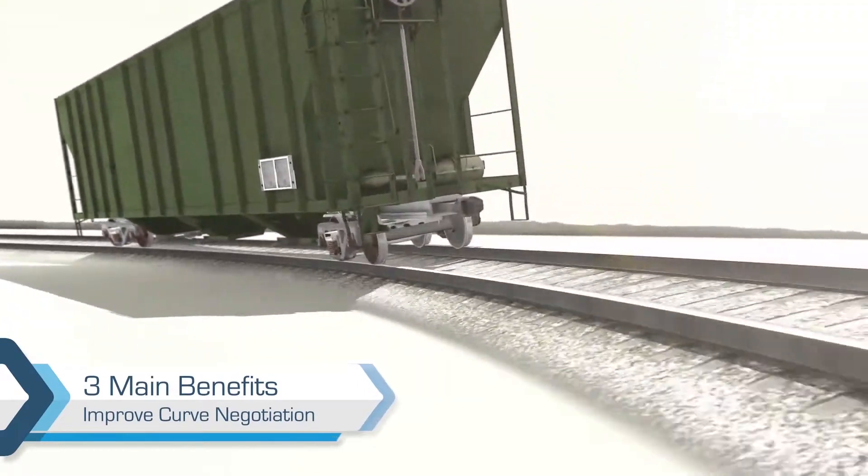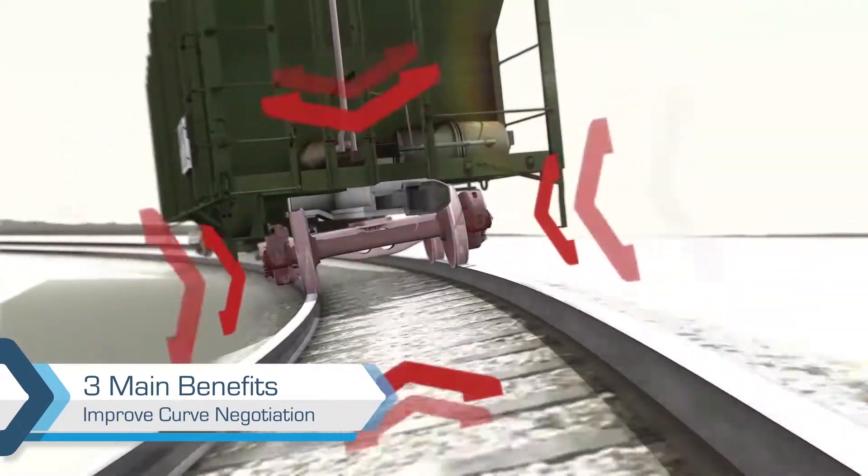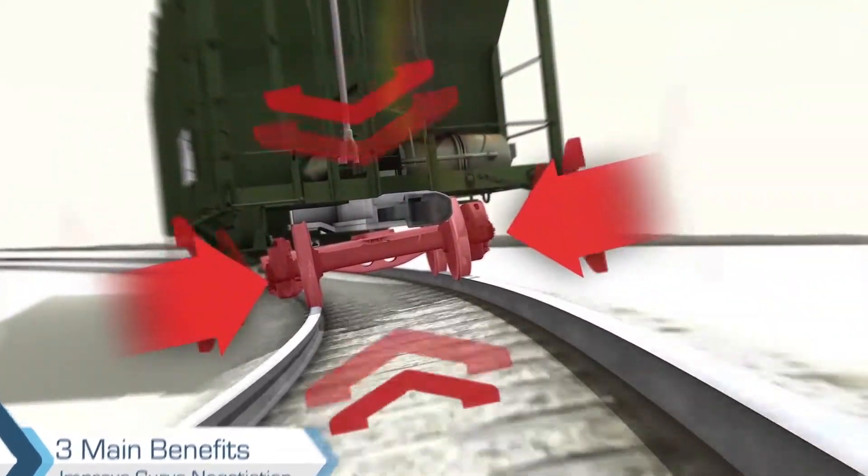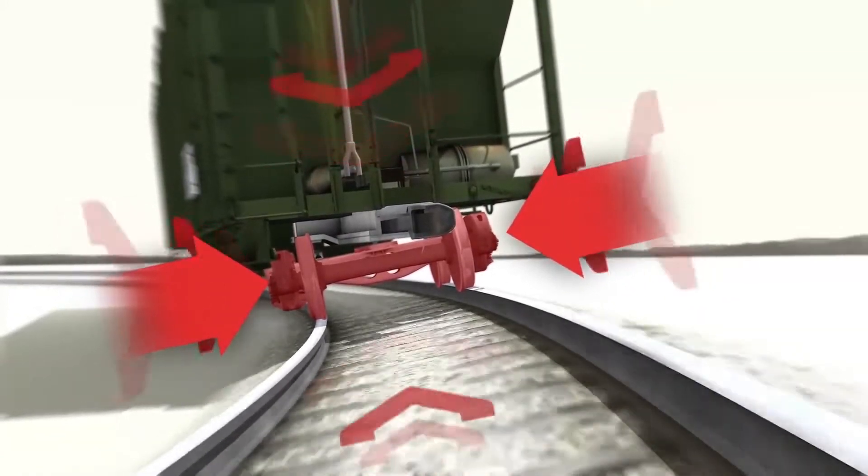When a car enters a curve, the leading truck will elevate on one side to match the curve's super elevation, while the trailing truck will remain level with the tangent track.